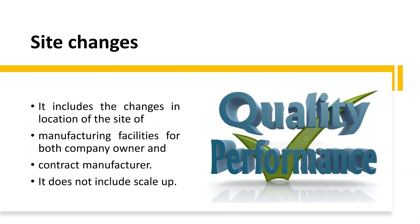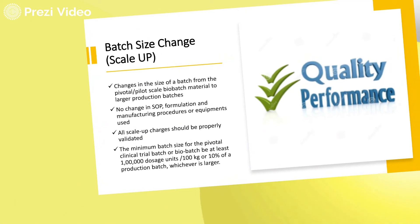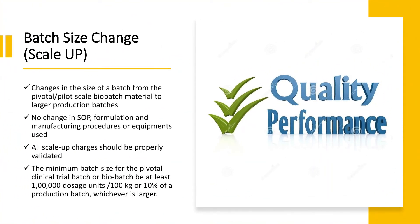Site changes are important: approval is granted for a specific site, so if the manufacturing site changes, the manufacturer must apply under SUPAC guidelines for post-approval changes and obtain prior permission from regulatory agencies. Site changes apply to manufacturing facilities, including contract manufacturers, but do not allow for simultaneous batch size changes. For batch size changes — scaling from pilot scale to bio-batch or larger production batches — no changes in the SOP, formulation, manufacturing procedure, or equipment are permitted; only the batch size changes, requiring prior regulatory approval.